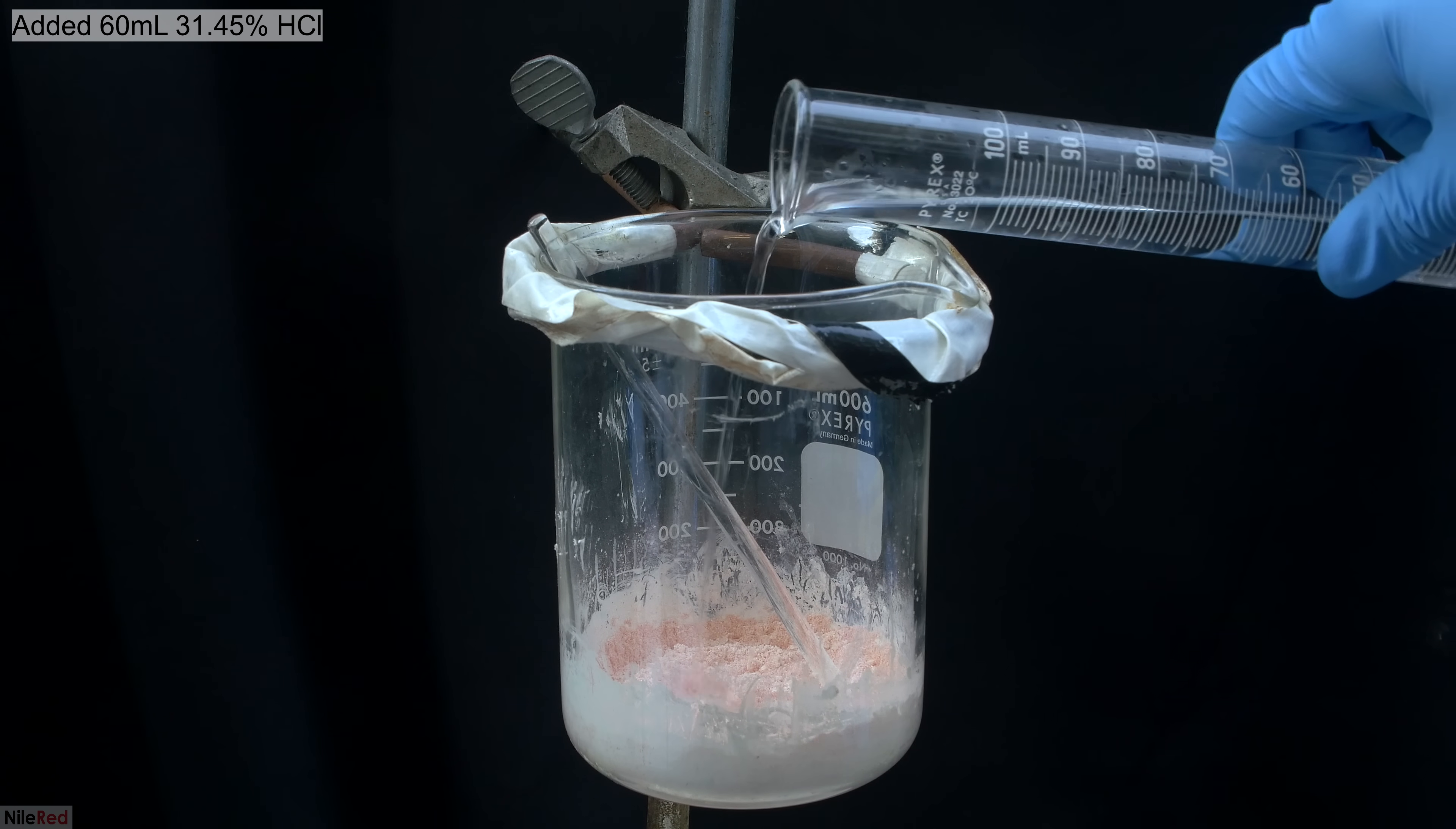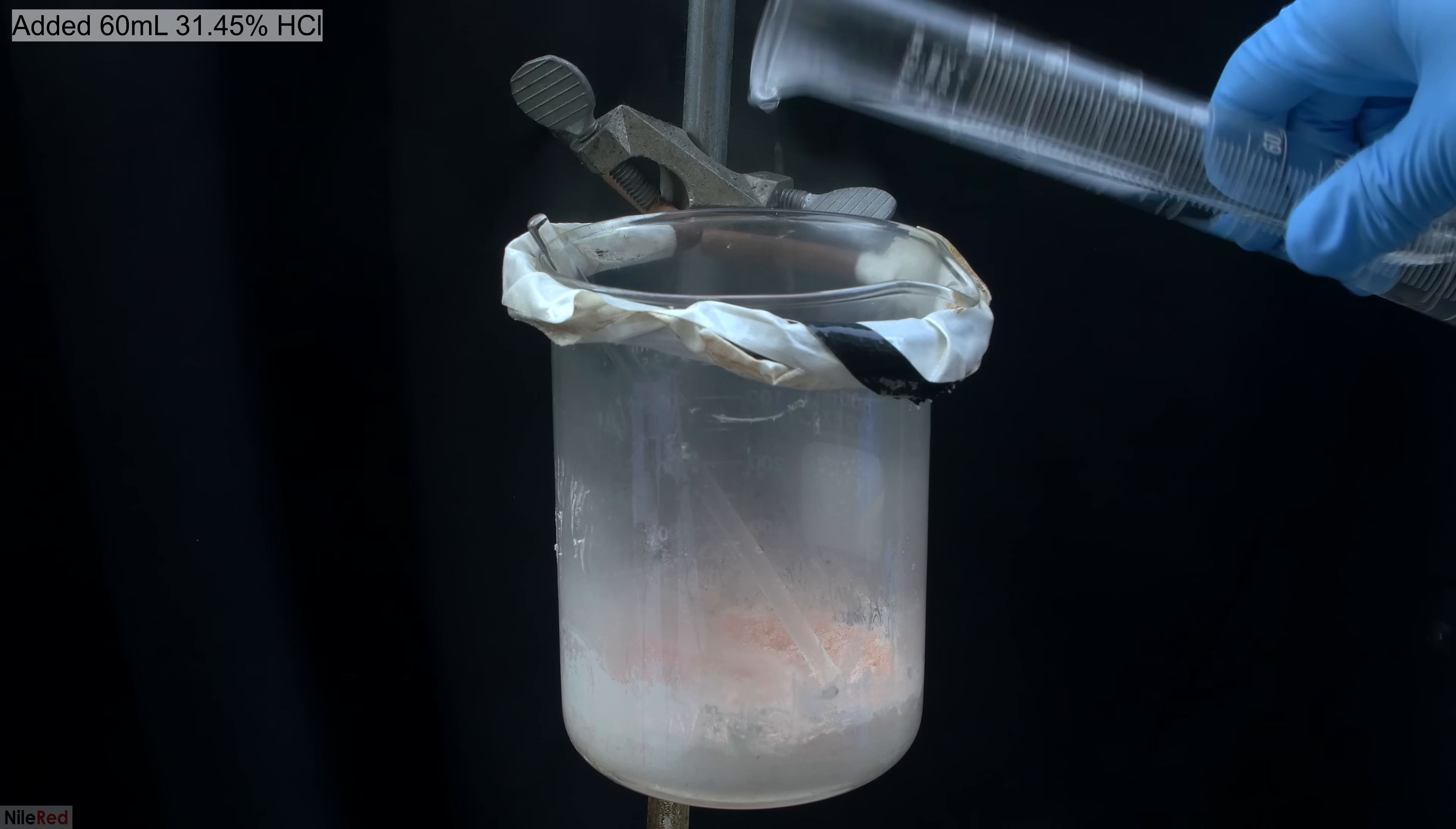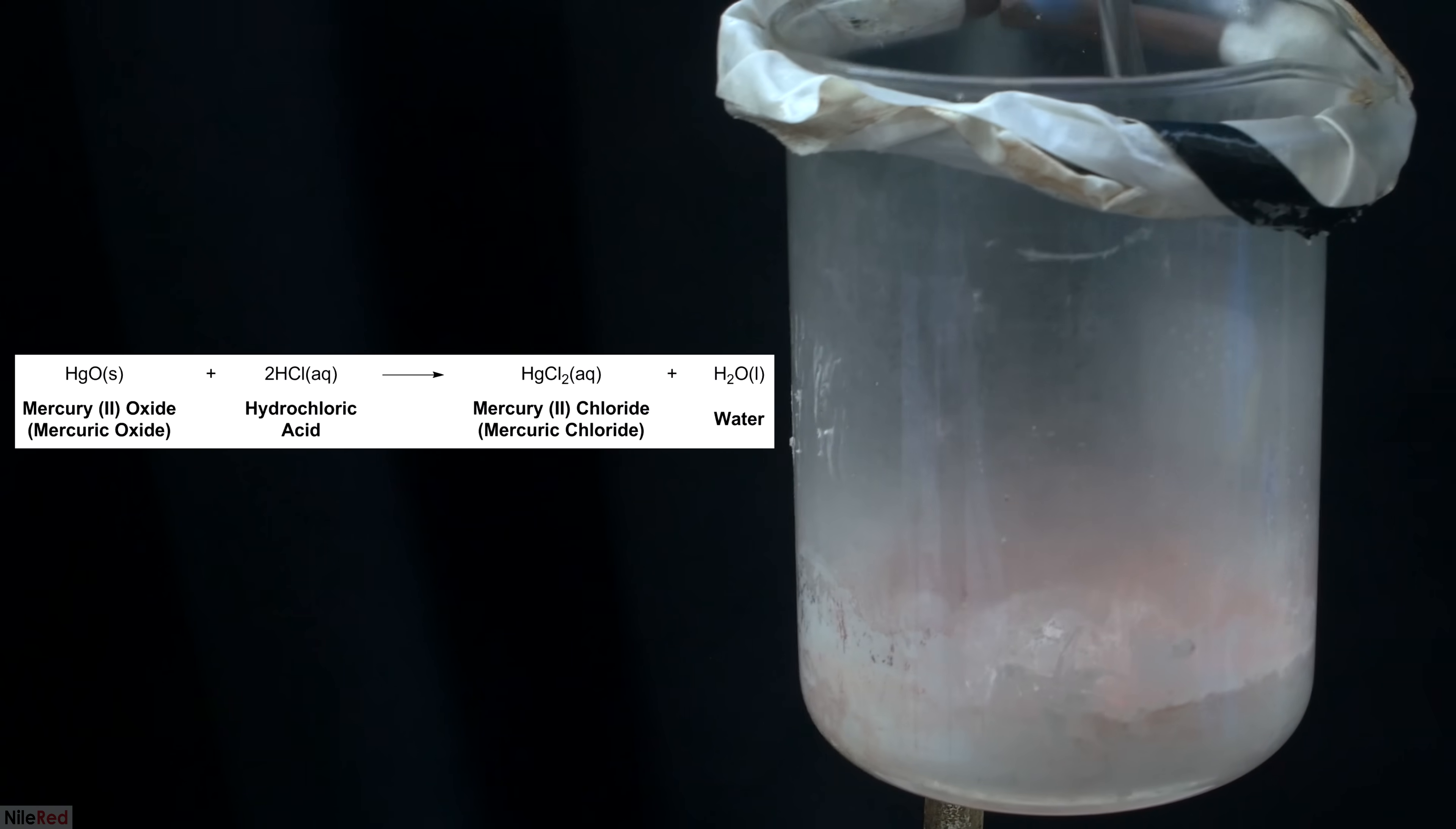Things were allowed to cool down a little bit, and then I added 60 milliliters of hydrochloric acid. The hydrochloric acid reacts immediately with the colored mercuric oxide to form colorless mercuric chloride. I added the hydrochloric acid in small portions with stirring in between, but there wasn't a huge reason for doing this, and it probably could have just been dumped in all at once.